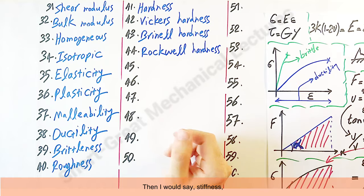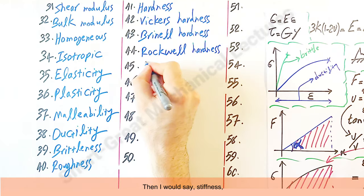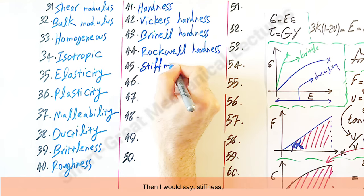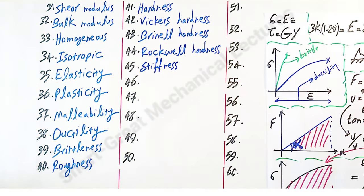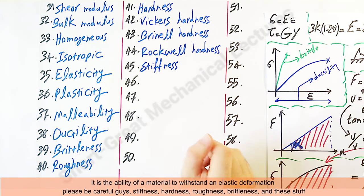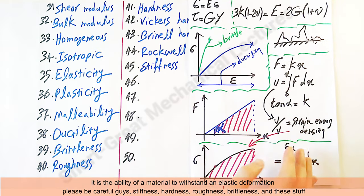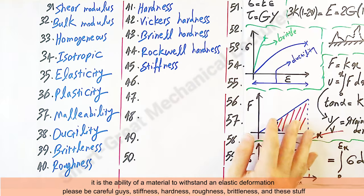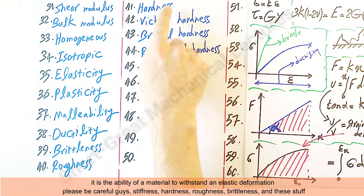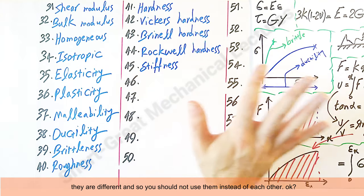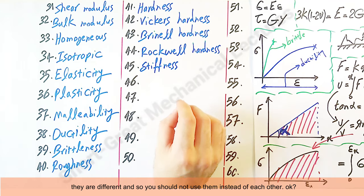Then I would say stiffness. It's the ability of material to withstand an elastic deformation. Please be careful, guys. Stiffness, hardness, roughness, brittleness, and this stuff, they are different, and so you should not use them instead of each other, okay?